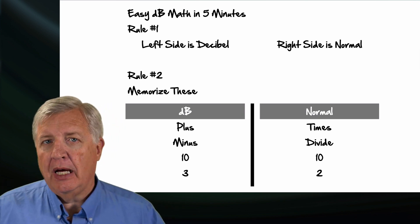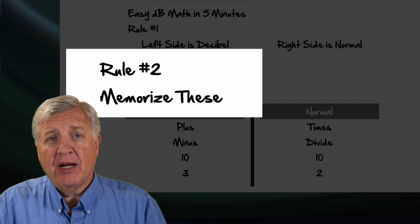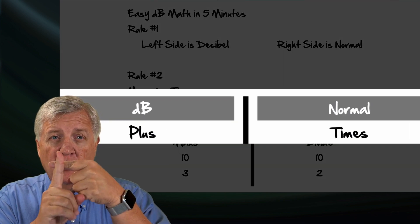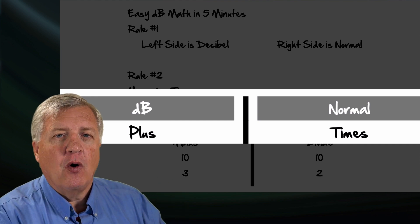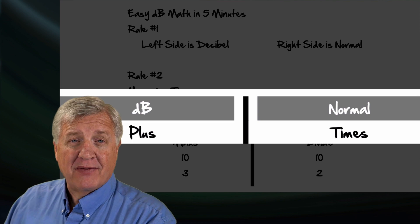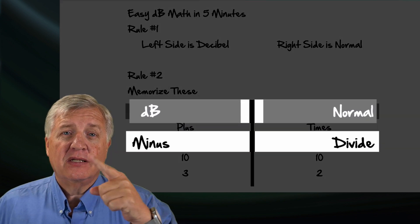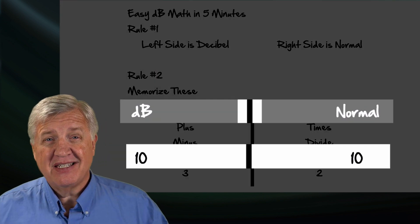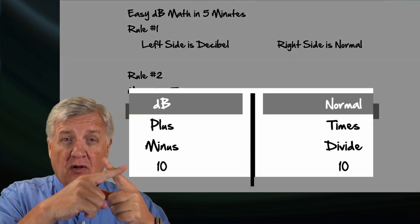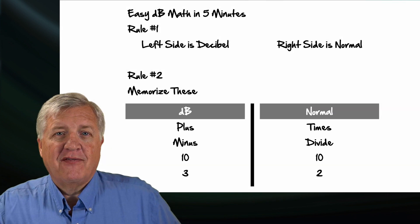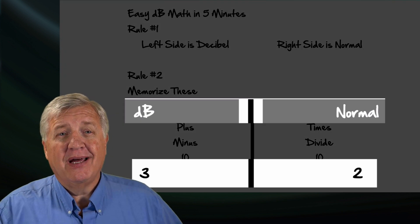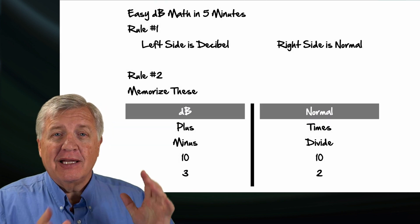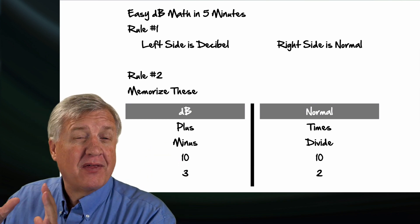The second rule is kind of a compound rule. You're going to need to memorize a couple of things — they're not terribly difficult to memorize. The plus sign, if you rotate it, becomes times. So pluses live only on the DB side; times live only on the regular math side. Plus rotates to times; minus rotates to divide. So minus on the DB side becomes a divide on the other side. Ten on DB stays ten on the regular side. Those first three are pretty easy: plus rotates, minus rotates, ten stays ten. And the last one you just have to memorize: three on the DB side becomes a two on the regular side.